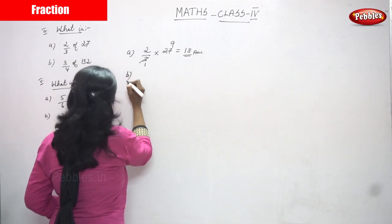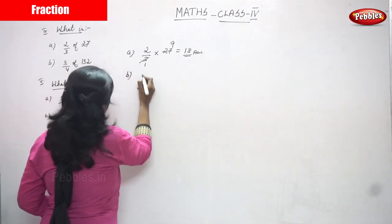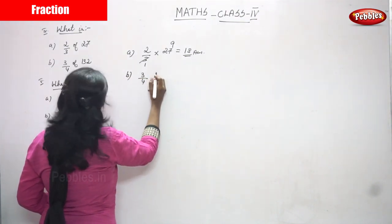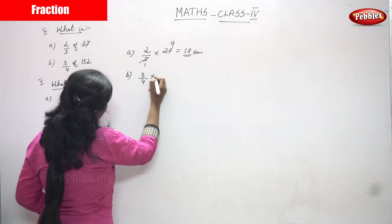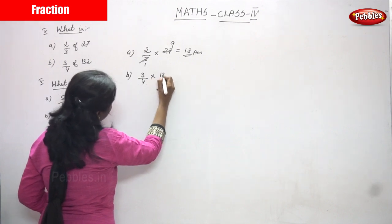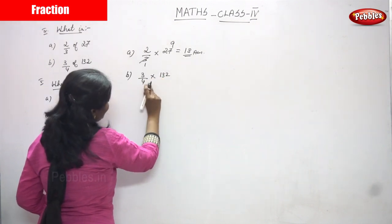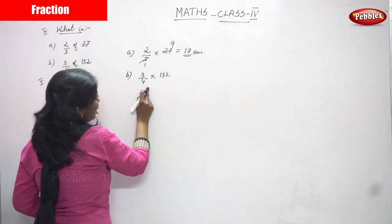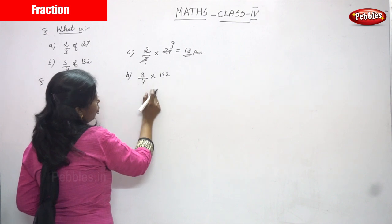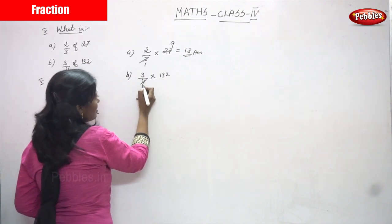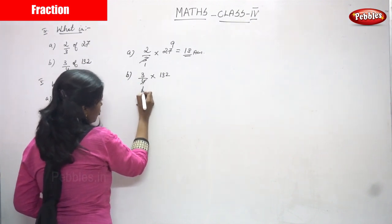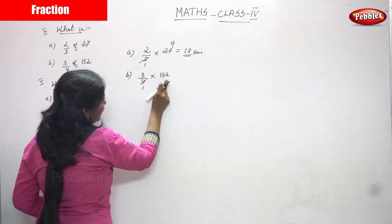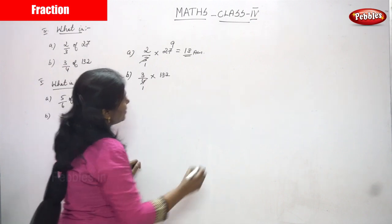Next is the B sum. So 3 by 4 of 132 — you have to put the multiplication sign here. I am going to cancel by 4. So 4 divided by 4 you get 1. Now I am going to cancel 132 by 4.